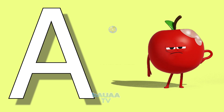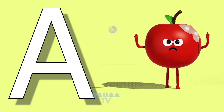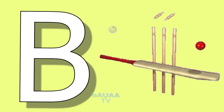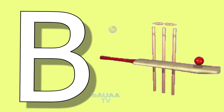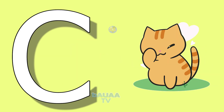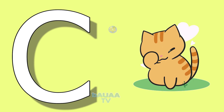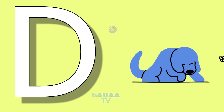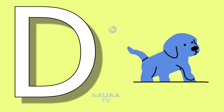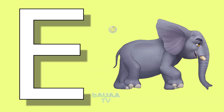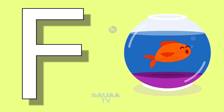A for apple, apple means save. B for bat, bat means balla. C for cat, cat means billi. D for dog, dog means putta. E for elephant, elephant means saathi. F for fish, fish means musli.